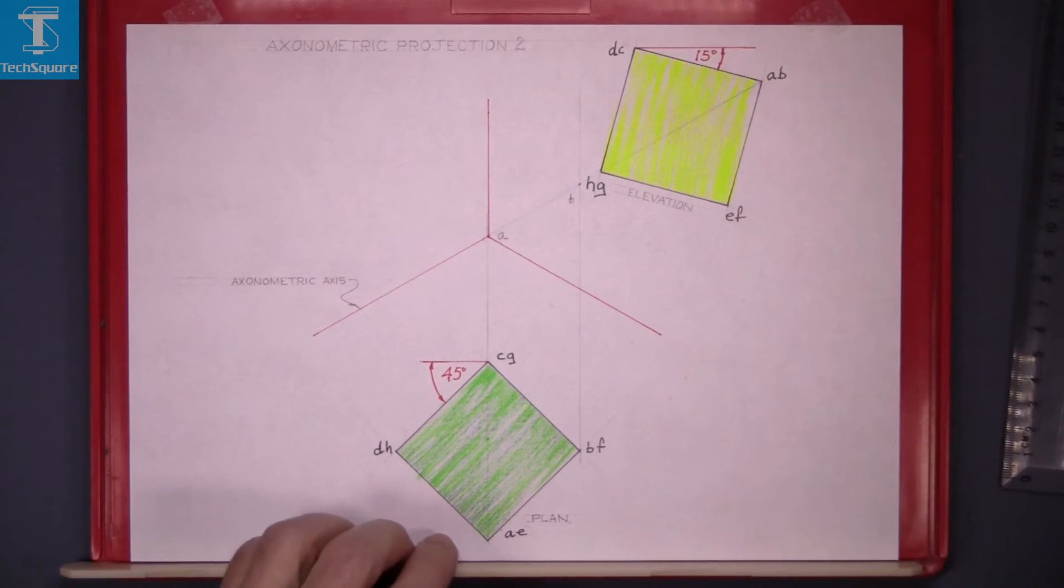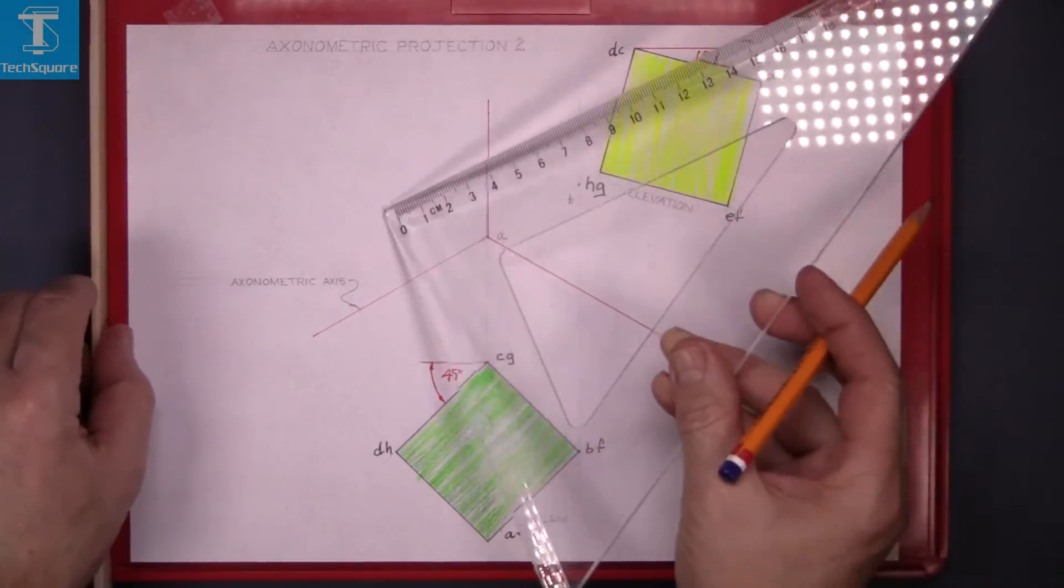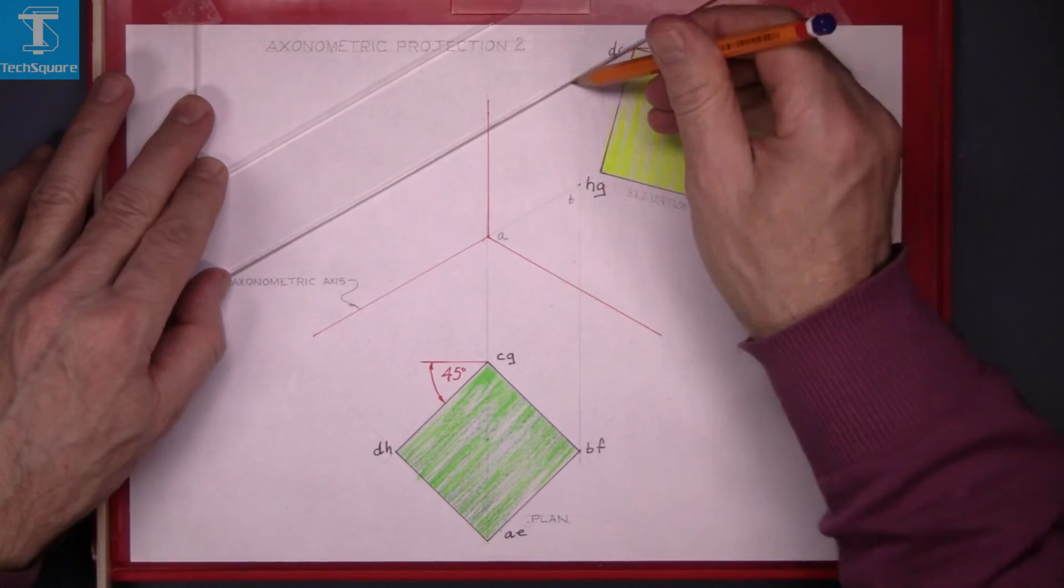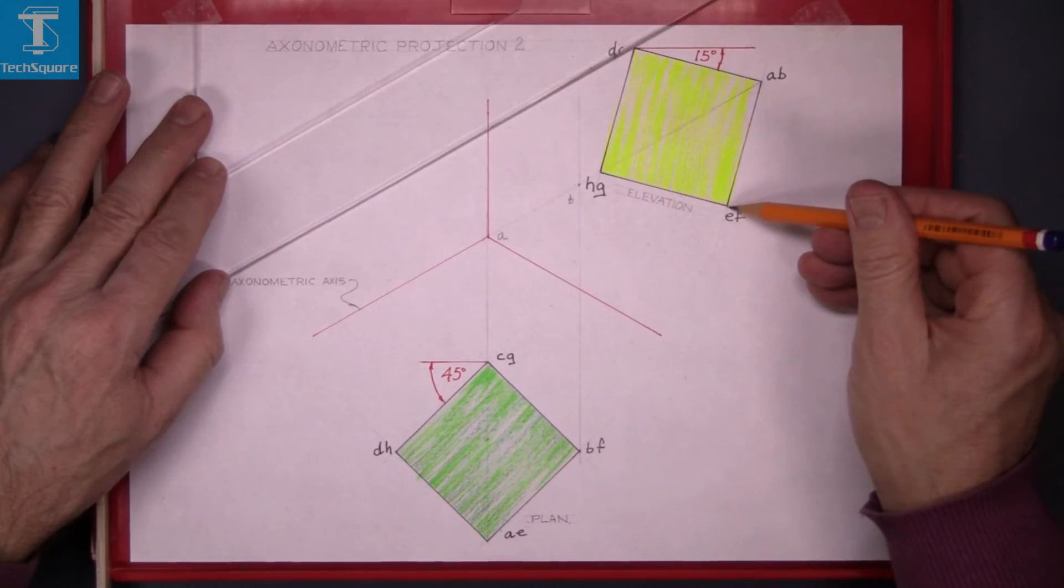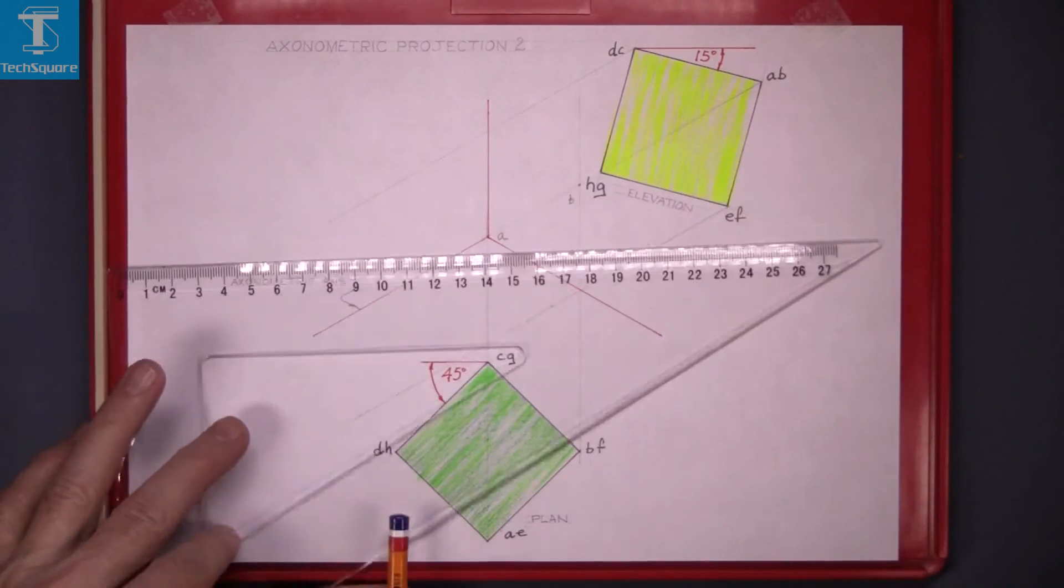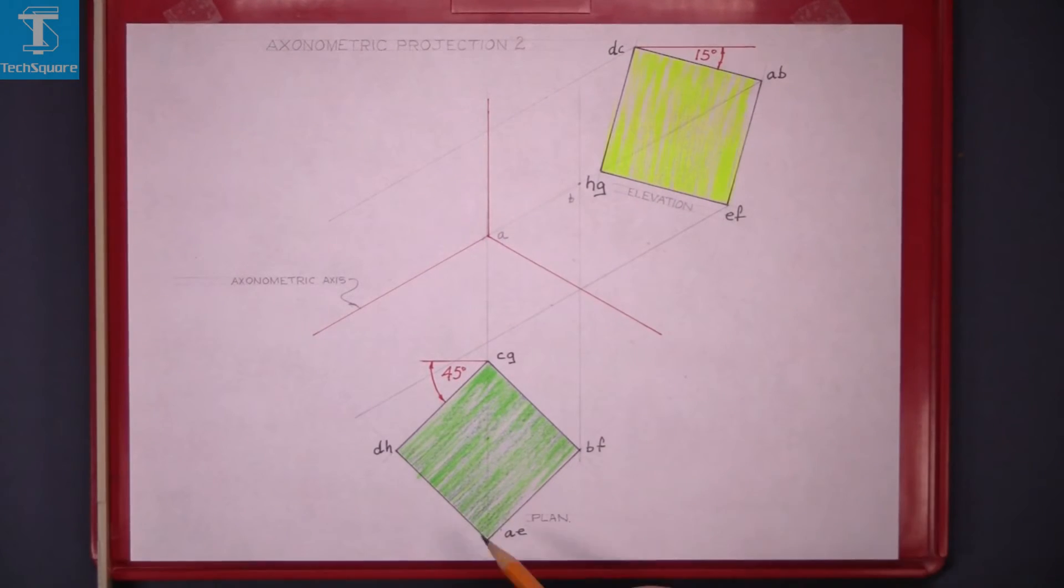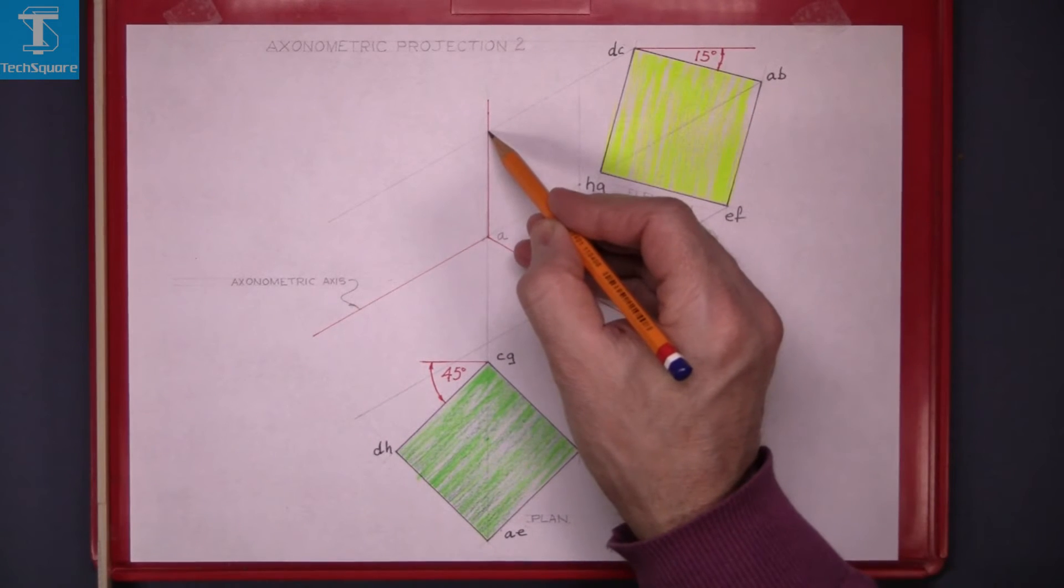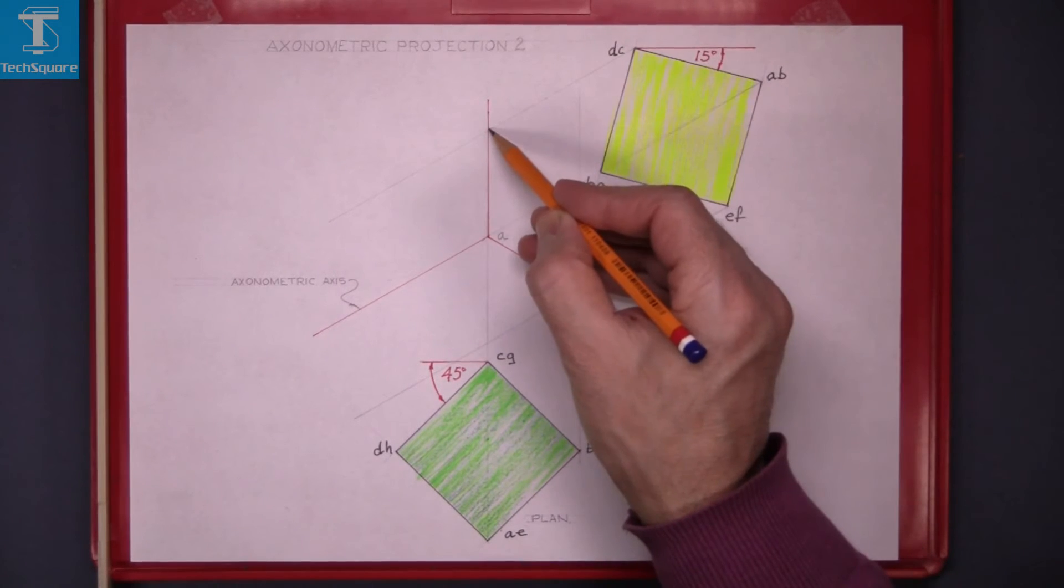Point C and D are on the top there so if we draw that line down at 30 degrees and we'll draw down this E and F line at the same time. Now point C in plan is there so draw C up and that gets point C there.